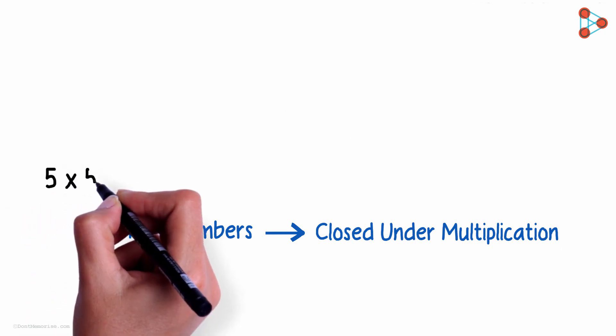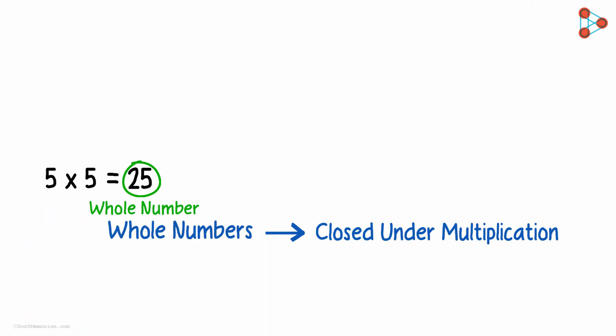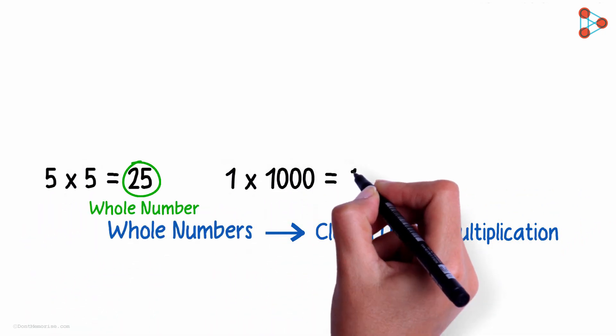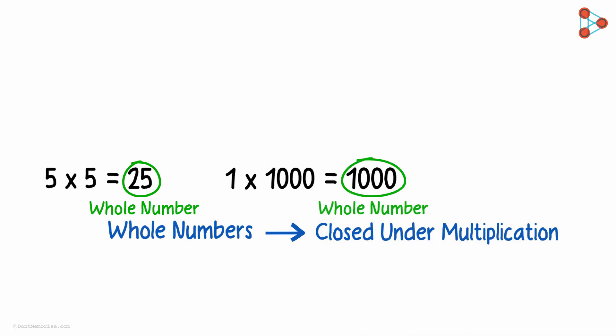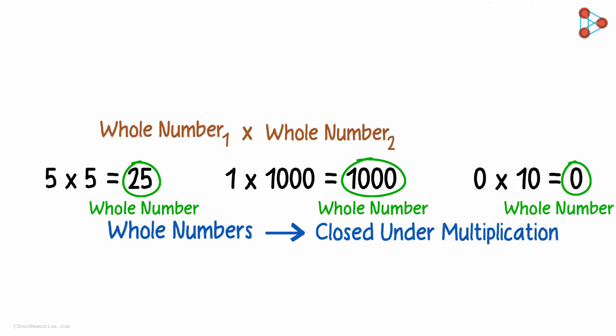5 times 5 is 25, a whole number. 1 times 1000 is 1000, a whole number again. Let's involve the whole number 0. 0 times 10 is what? When you multiply any number with 0, we get 0 again. So it's 0. We take any two whole numbers and multiply them, the answer that we get will always be a whole number.